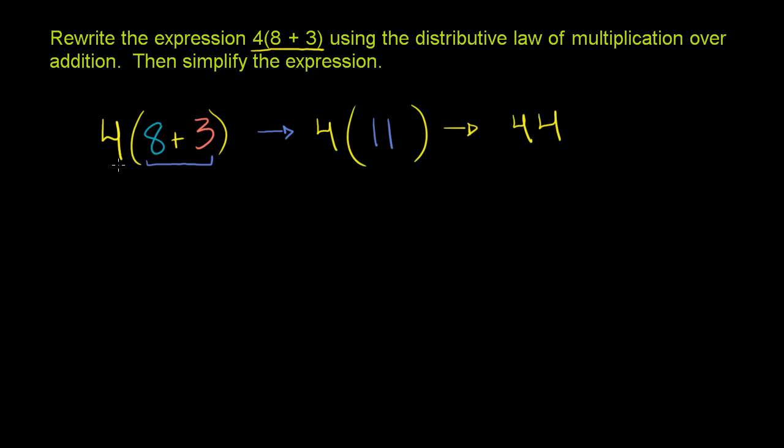It's called the distributive law because you distribute the 4. In the distributive law, this becomes 4 times 8 plus 4 times 3. We're going to think about why that is in a second. So this equals 4 times 8 plus 4 times 3.